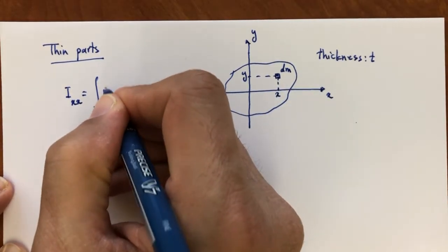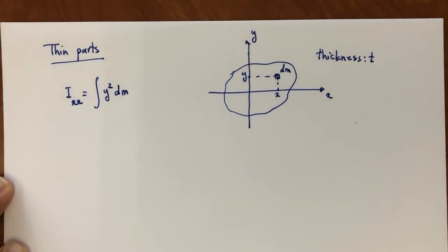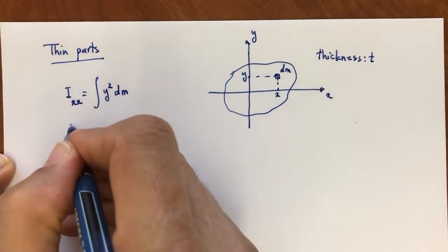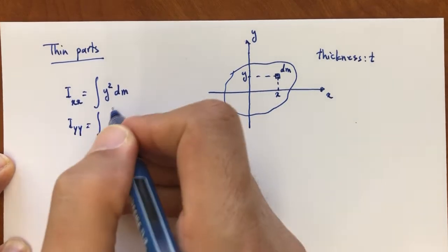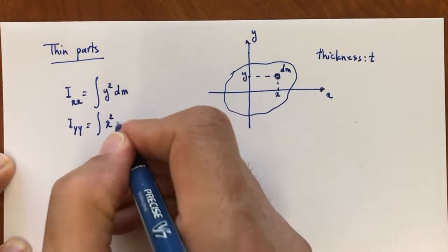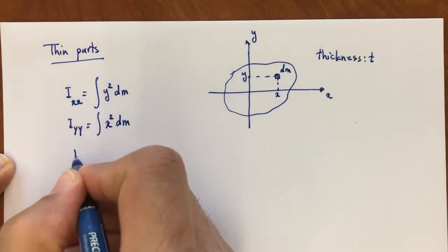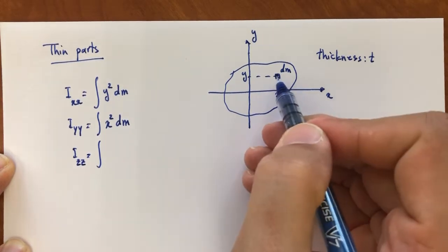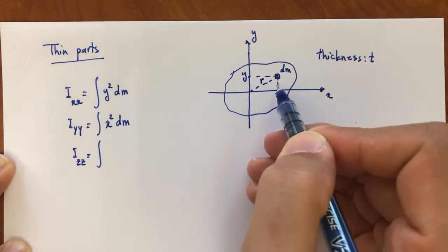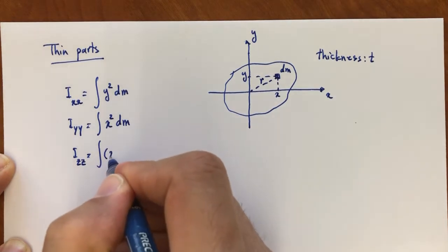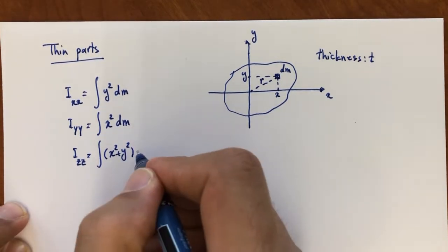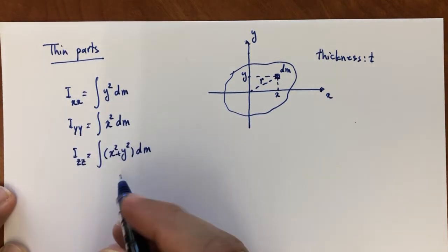The mass moment of inertia about the y-axis is x squared times dm, since the distance from the y-axis is x. For the z-axis, the distance of the element from the z-axis is R, and R squared equals x squared plus y squared. So the mass moment of inertia about the z-axis is the integral of (x squared plus y squared) times dm.